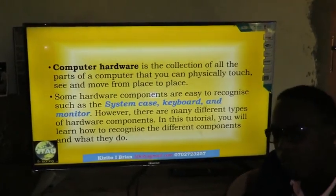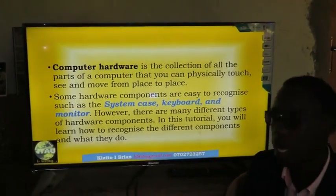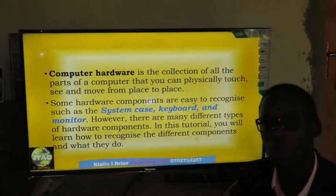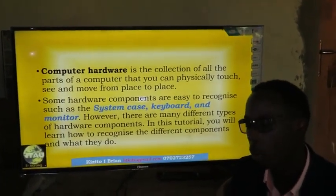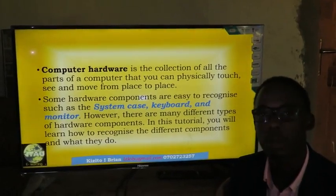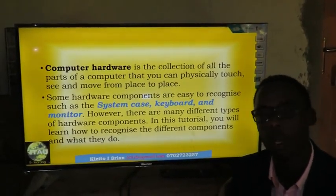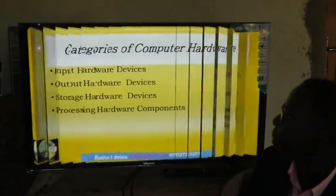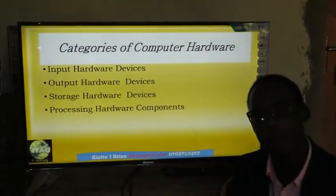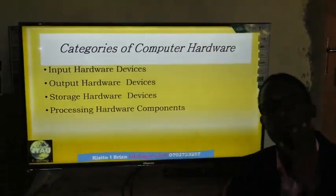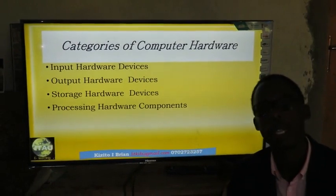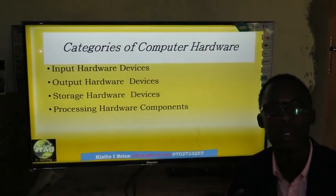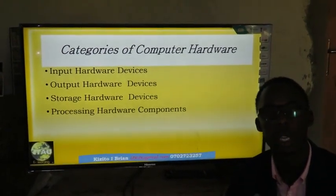However, there are many different types of computer hardware that by the end of this tutorial we shall come to see how to recognize them and know what they do and how they perform what they do. Computer hardware is basically categorized into four main categories: input, processing, storage, and output.